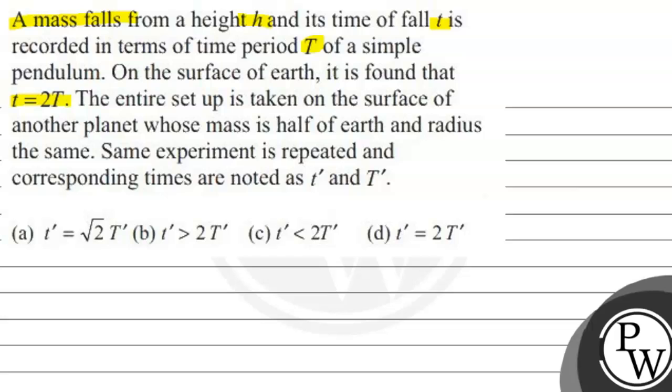small t equals 2 times capital T. The entire setup is taken on the surface of another planet whose mass is half of earth and the radius is the same. The experiment is repeated and the corresponding times are noted as t' and T'.